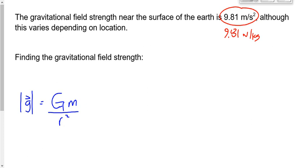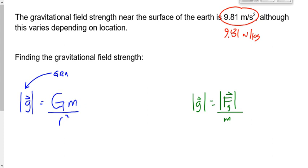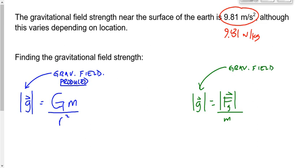There's another equation for field strength as well: g equals F over M. In both cases g stands for gravitational field strength, but the first equation gives the gravitational field strength produced by something, while the second gives the gravitational field strength experienced by something. Using the example of the Earth and the board marker: if you want to find the field strength produced by the Earth, use the first equation. If you want to find the field strength experienced by the board marker, use the second equation.